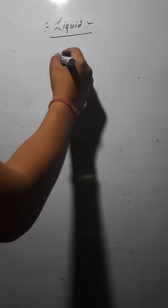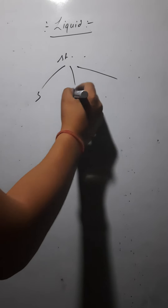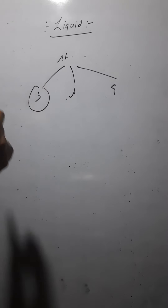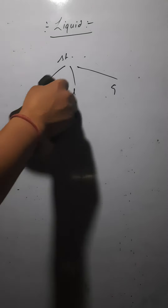Hello dear students. Today we would move ahead in this first chapter of class 9 science, that is Matter in Our Surroundings. Here we were discussing the states of matter. There are three states of matter: solid, liquid, and gas. We have already discussed solids in the previous video, so today we are here to discuss the second state, that is the liquid.